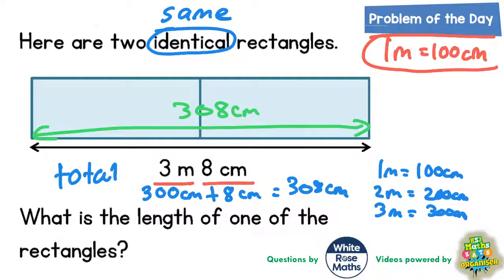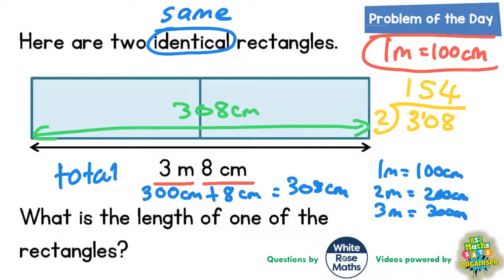Now we need to split this in half. The easiest way is to do a little bus shelter: 308 divided by 2. 2s into 3 goes once remainder 1, that now makes 10. 2s into 10 goes 5 times, and 2s into 8 goes 4 times. So the length of one of the rectangles is 154 centimeters.